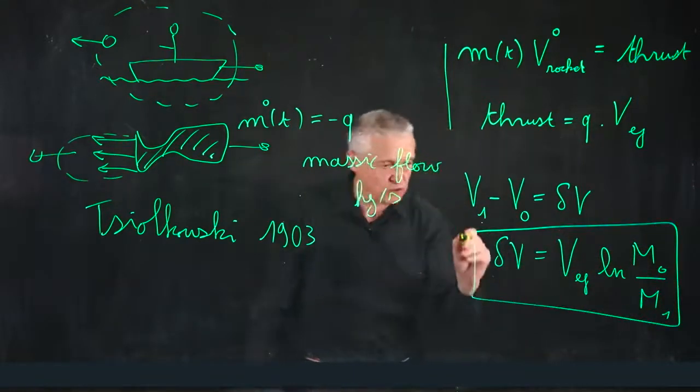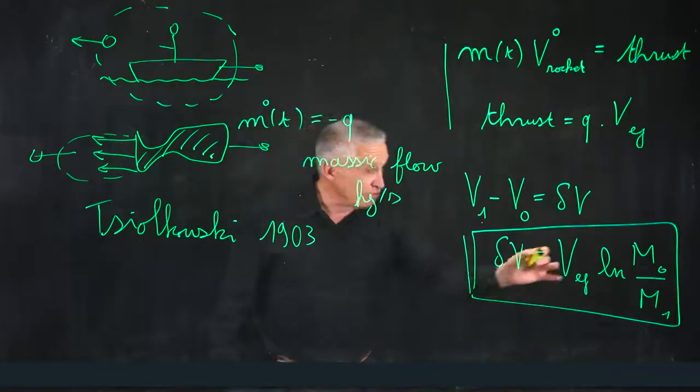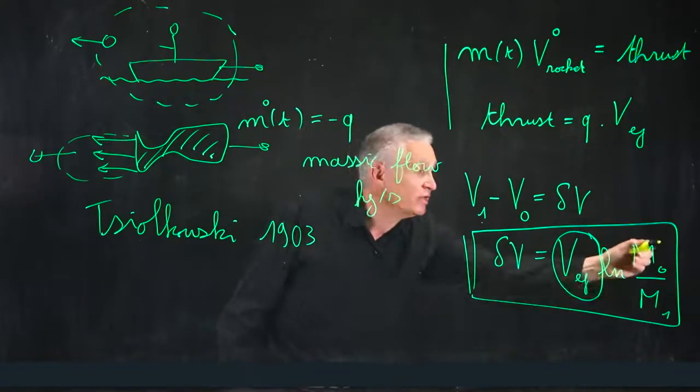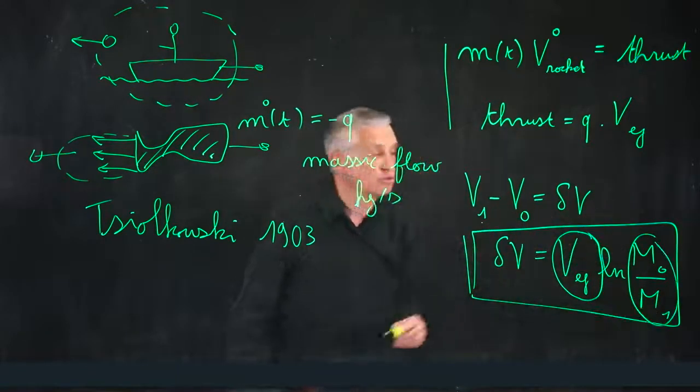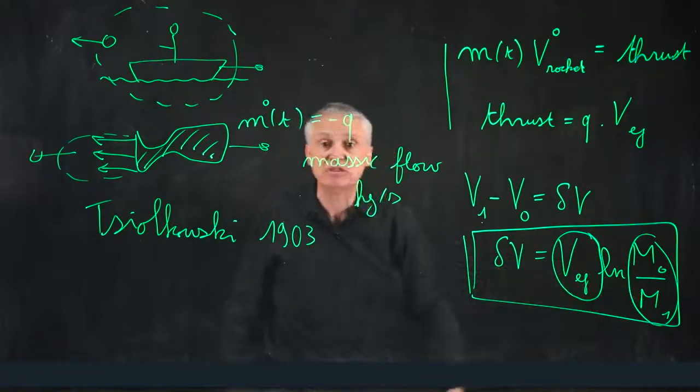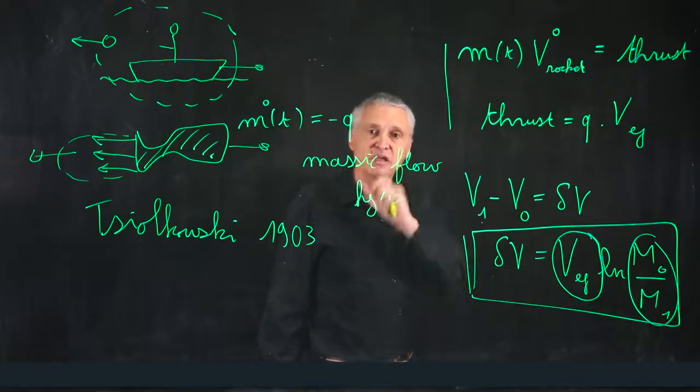Which opens the door to space flight. We see two things. We need high ejection velocity and light structures. In order to have the maximal ratio between the full and empty rocket. And that's the secret to access to space.